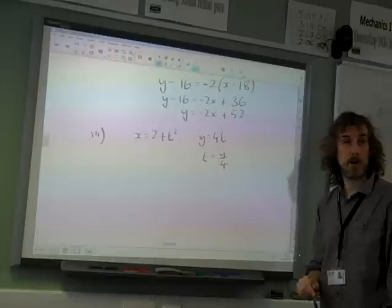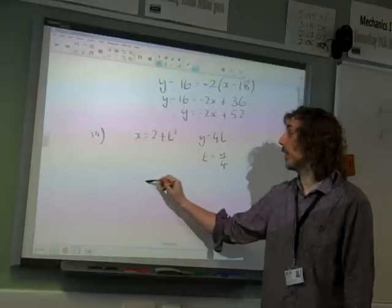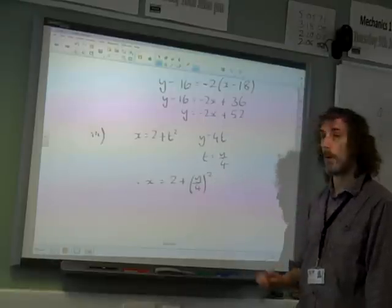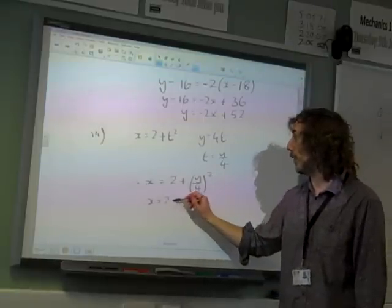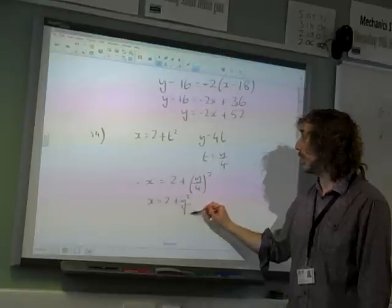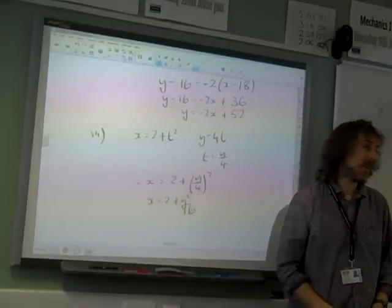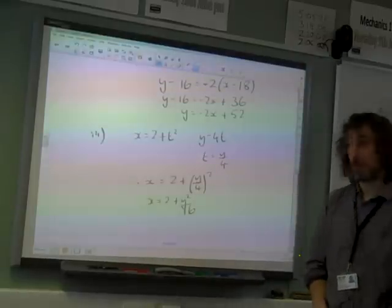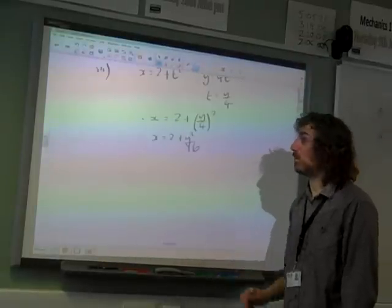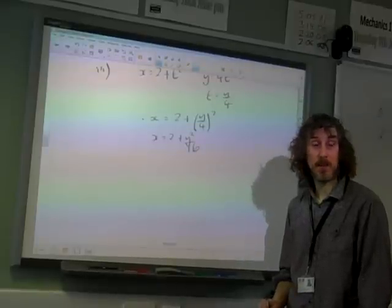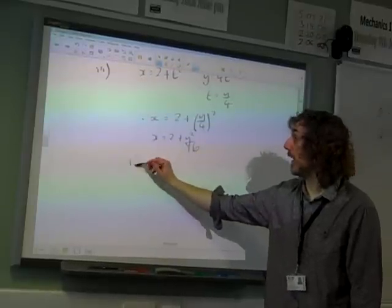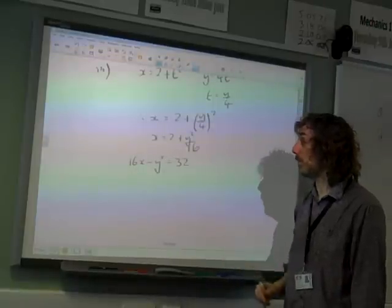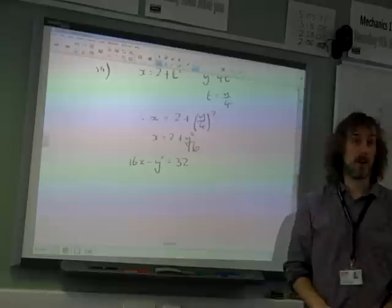So let's substitute x is 2 plus y over 4 squared. x is 2 plus y squared over 16. I don't know if that is the Cartesian equation. It's not particularly nicely written. You could leave it like that. We could write 16x minus y squared equals 32. That's probably quite a nice way of writing it.